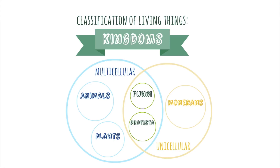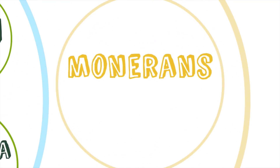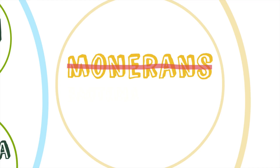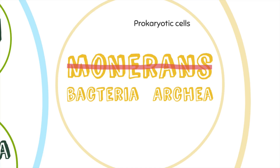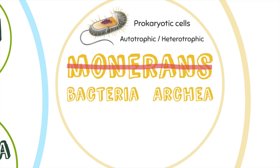Now let's get to know a little bit about them. Monorans is a quite old term, and scientists now prefer to divide this group into bacteria and archaea. They are organisms with prokaryotic cells with no nucleus. Some of them make their own food so they are autotrophic, and others need to eat so they are heterotrophic.